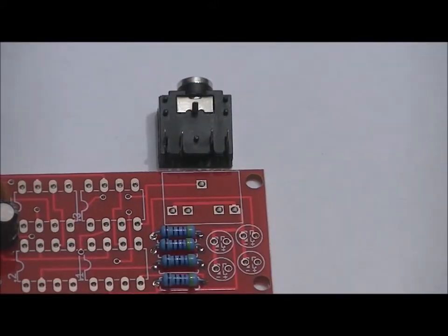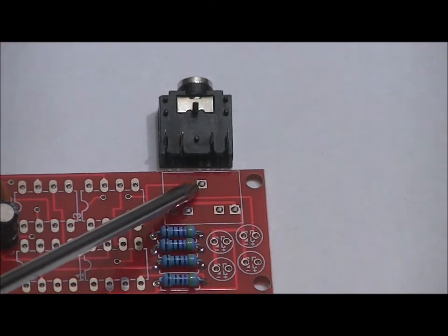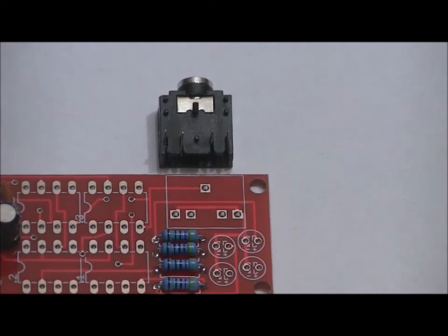As you can see, the stereo socket has four pins in the back and one pin in the front. And on the silk screen, there is one pin in the front and four in the back. Line them up and be very careful. Place it so it's flush to the board and then solder it into place.